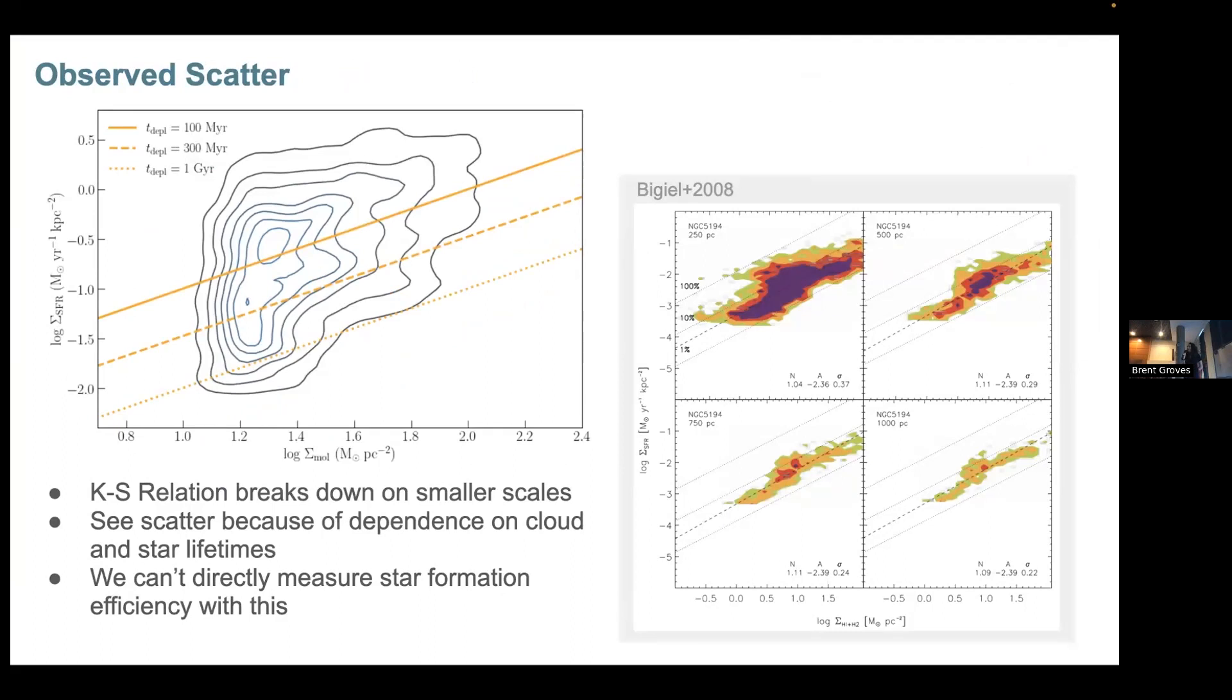As we heard in Melanie's talk, it's not that there's a different depletion time in each region of the object, but instead we're probing different points in the lifetime of either the gas clouds or the stars. So to measure the star formation efficiency, we can't use this directly and we instead need to talk about a different algorithm for measuring the lifetime of the clouds.